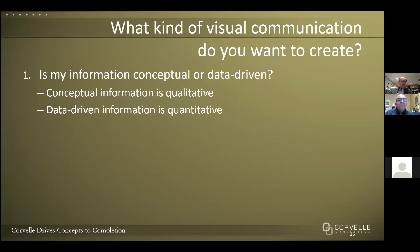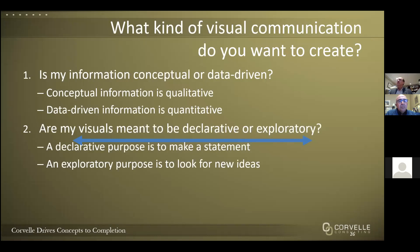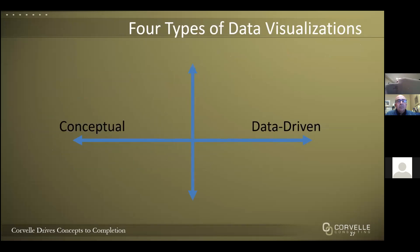A good way to identify the kind of visual communication that is best is to answer just two questions. First: is my information conceptual or data-driven? Conceptual information is qualitative — think processes, hierarchies, cycles, and organization. Data-driven information is quantitative — think revenue, patients, oil wells, ratings, percentages. Second: are my visuals meant to be declarative or exploratory? Declarative means communicating a statement or finding to an audience — to inform and affirm. An exploratory purpose is to look for new ideas — to seek, explore, consider. The answers to these two questions lead us to the four-quadrant chart.